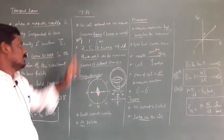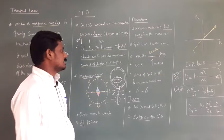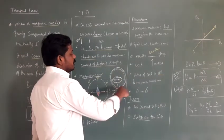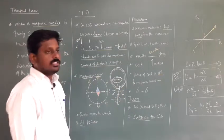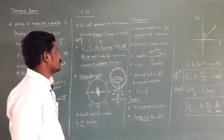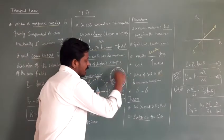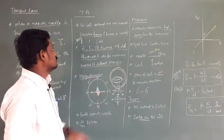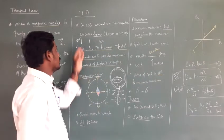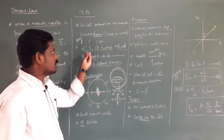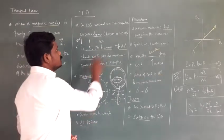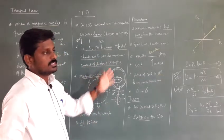The tangent galvanometer works under the principle of tangent law. It has a copper coil wound on a non-metallic, non-magnetic circular frame made of brass or wood. The coil has different numbers of turns — 2 turns, 5 turns, and 50 turns — of different wire thickness. The 2-turn coil is the thickest, the 5-turn coil is somewhat less thick, and the 50-turn coil uses thin copper wire. It is used to measure currents of different strengths.